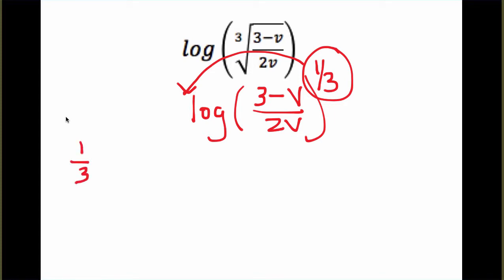So we get 1/3rd times the log of (3 minus v) all over 2v. And then what I see here is this division. And remember division can get separated using subtraction.